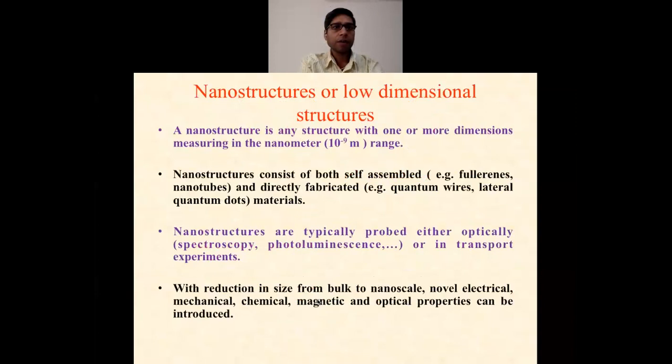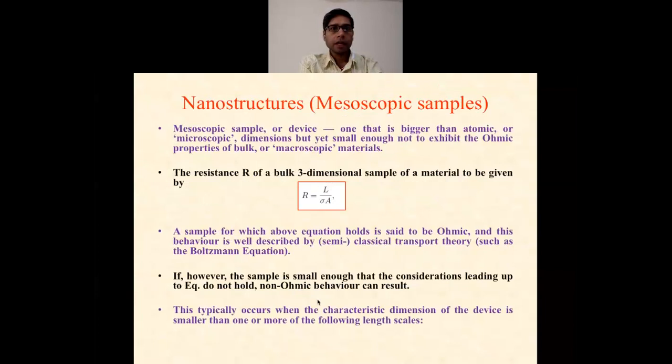Nanostructure or low dimensional system: I already explained that the nanostructure is any structure with one or more dimensions measuring in the nanometer range. Nanostructures consist of both self-assembled and directly fabricated materials. Nanostructures are typically probed either optically using spectroscopy or photoluminescence, or in transport experiments. When you reduce the size from bulk to nano, some novel electrical, mechanical, chemical, magnetic, and optical properties can be introduced. Nanostructures are also called mesoscopic. Mesoscopic means they are intermediate between bulk and smaller systems. They are bigger than atomic or microscopic dimensions but small enough not to exhibit ohmic properties. The resistance of a bulk material is given by R equals L over sigma times A, where L is the length, sigma is the conductivity, and A is the area of cross section.